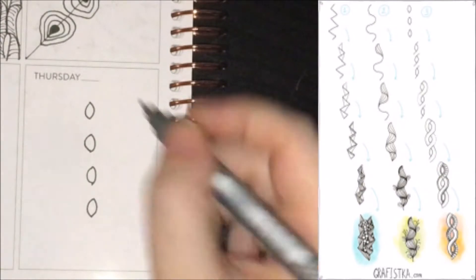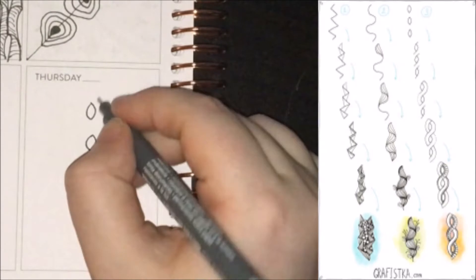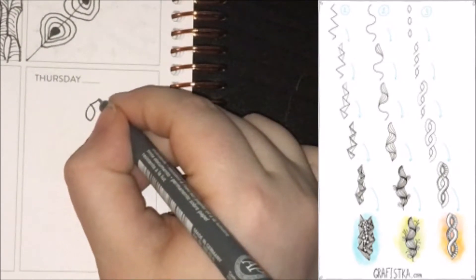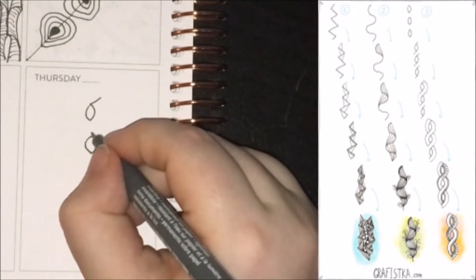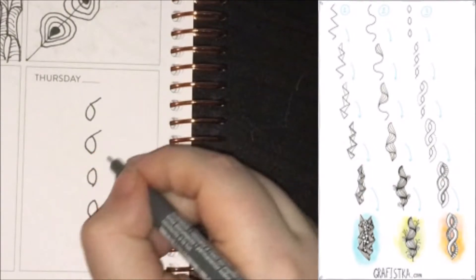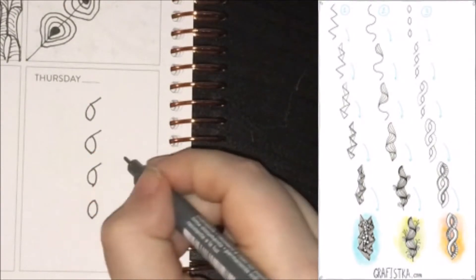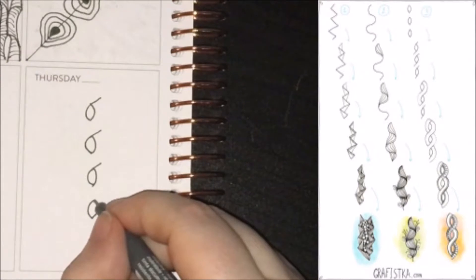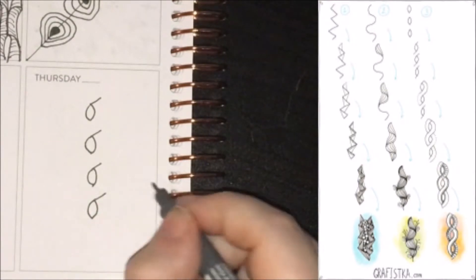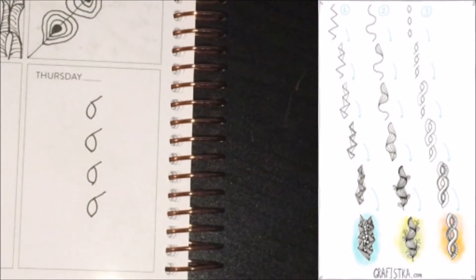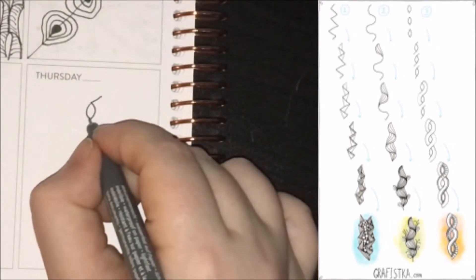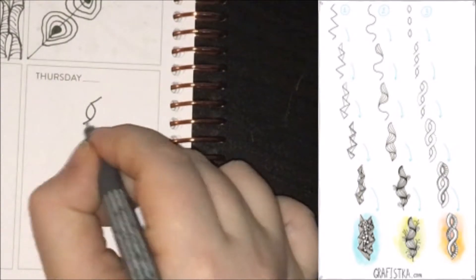Then at the top of each pair of parentheses, you want to draw a line going up and off to the right. And then on the bottom, you want to draw a line going down and off to the left.